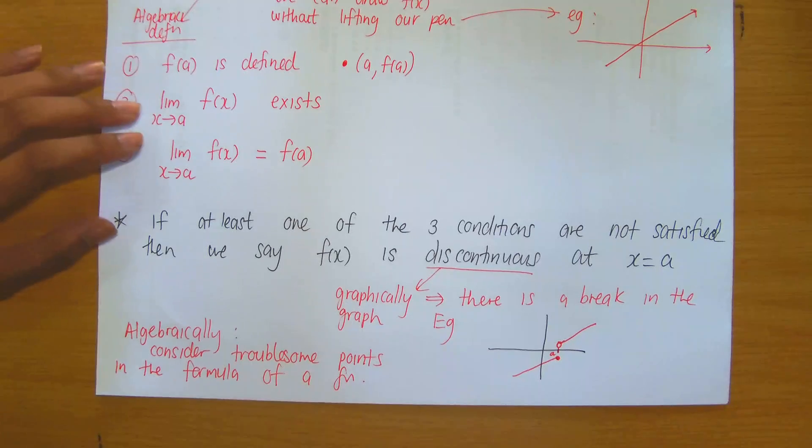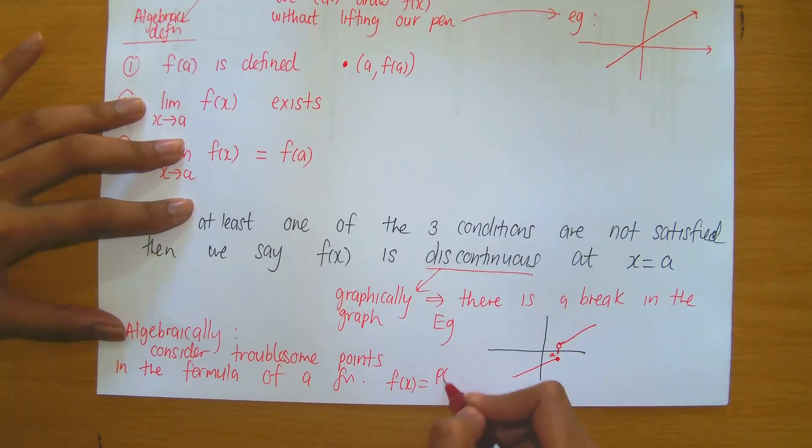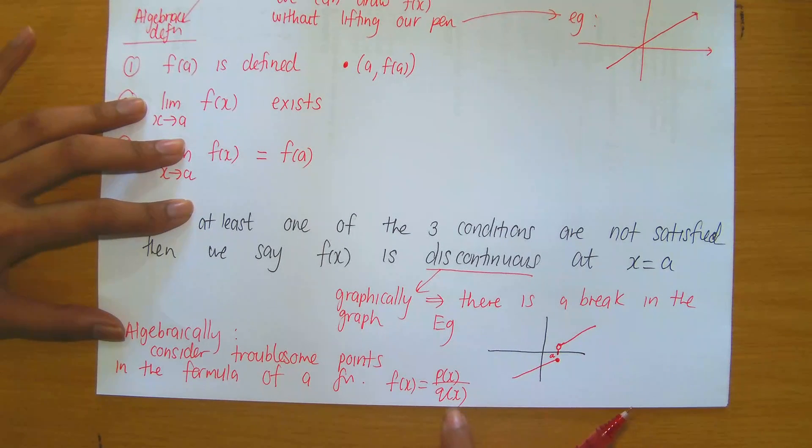In particular, if you were given a function that was a fraction, let's say it was p(x) over q(x), then observe that q(x), the denominator, cannot be zero.